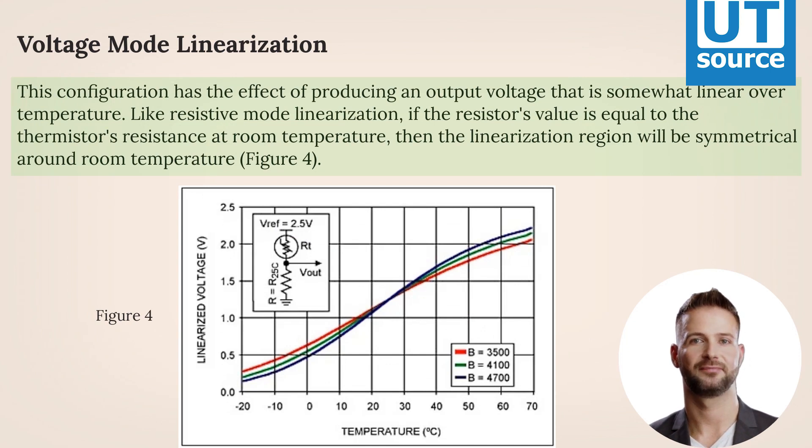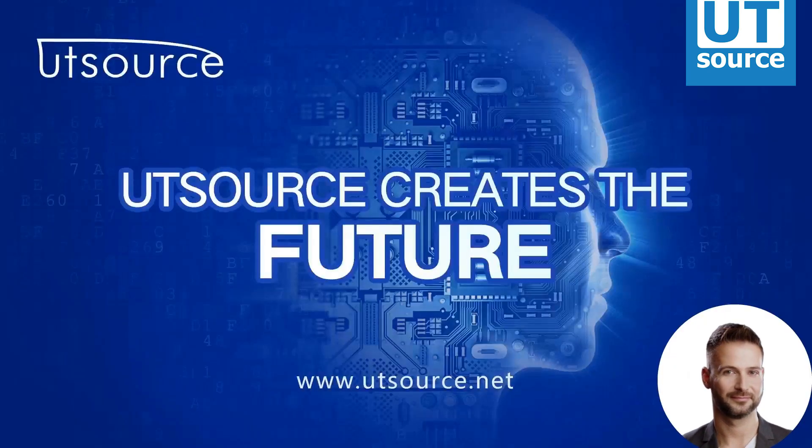Voltage Mode Linearization, on the other hand, places the thermistor in series with a normal resistor forming a voltage divider circuit. The voltage divider circuit must be connected to a known, fixed, and stable voltage reference, VREF. This configuration has the effect of producing an output voltage that is somewhat linear over temperature. Like resistive mode linearization, if the resistor's value is equal to the thermistor's resistance at room temperature, then the linearization region will be symmetrical around room temperature, as shown in figure 4.